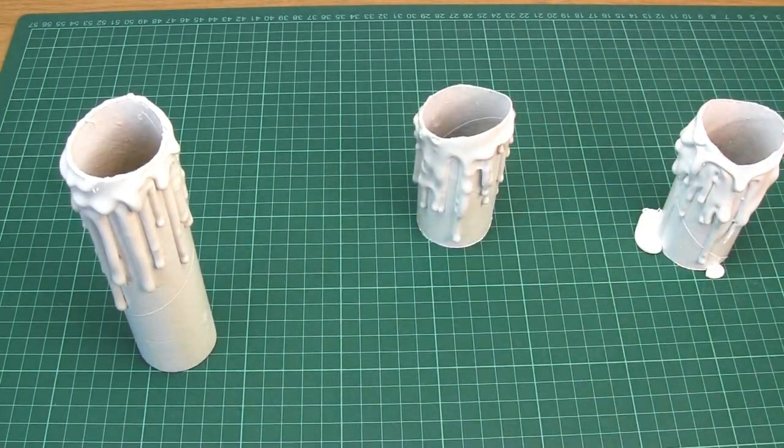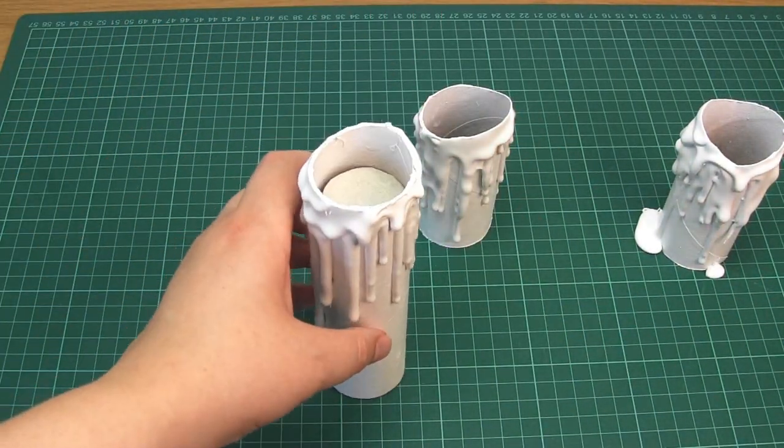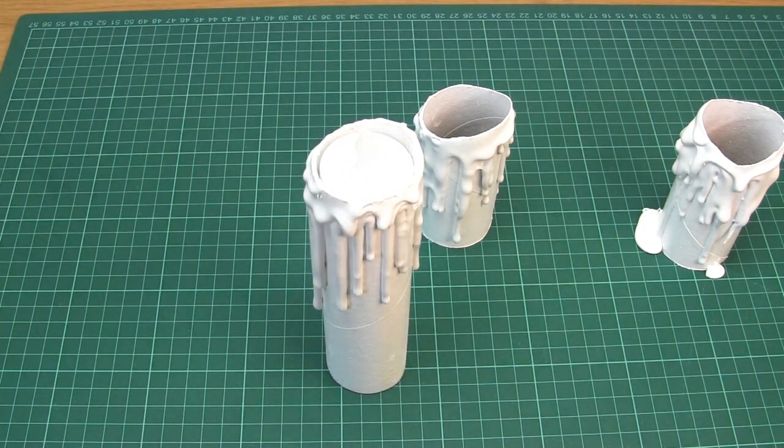Assemble the candles by placing the platforms inside, adding the tea lights, and then adding the felt circles.